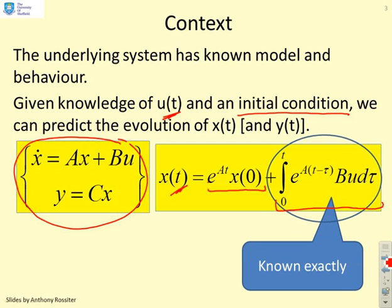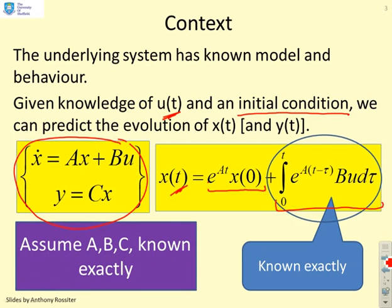Now we're going to assume that the convolution integral part is known exactly because we're assuming here that A, B and C are known exactly and we're also assuming we know the input u.